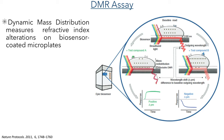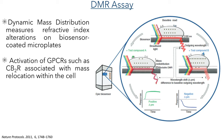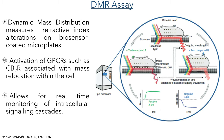The final assay we will look at is the DMR assay, which stands for dynamic mass redistribution. This measures alterations in the refractive index of cells grown on a biosensor-coated microplate. This method does not look at any specific analytes but instead looks at the overall change in the distribution of large molecules within the cell. Activation of GPCRs such as the CB2 receptor are known to cause a redistribution of mass within the cell, so activation with an agonist should correlate with a shift in the refractive index detected by the DMR assay. This method is particularly useful as it allows for real-time monitoring of intracellular signaling cascades, unlike the previous methods which only measure endpoint concentrations.